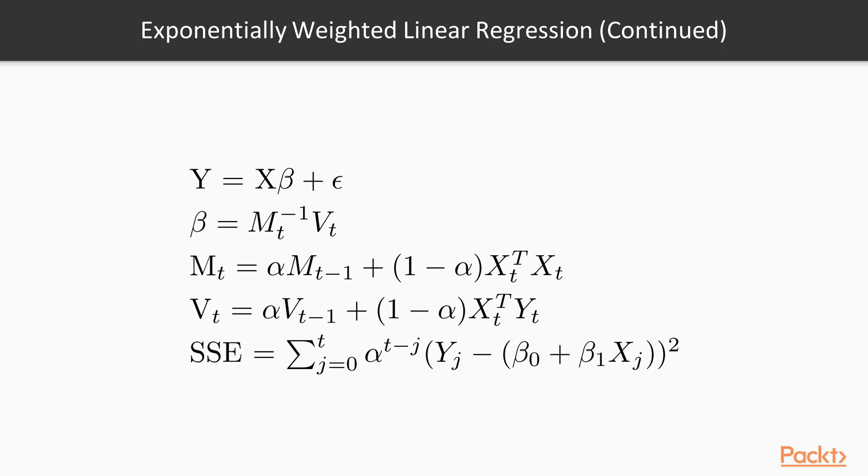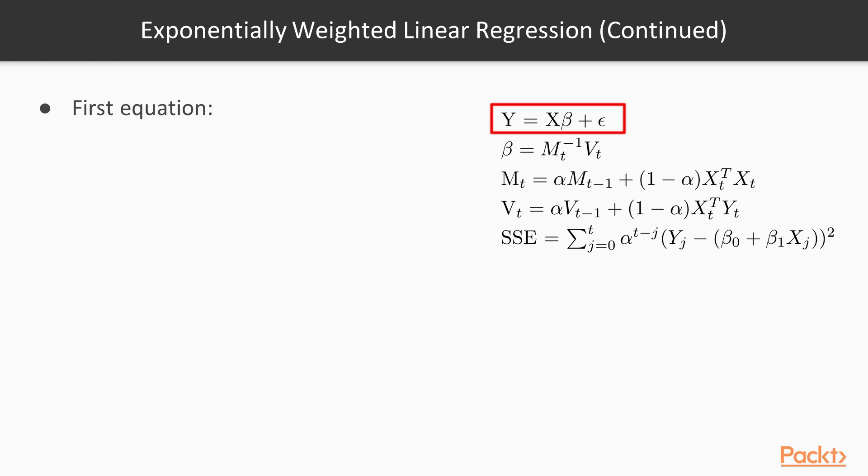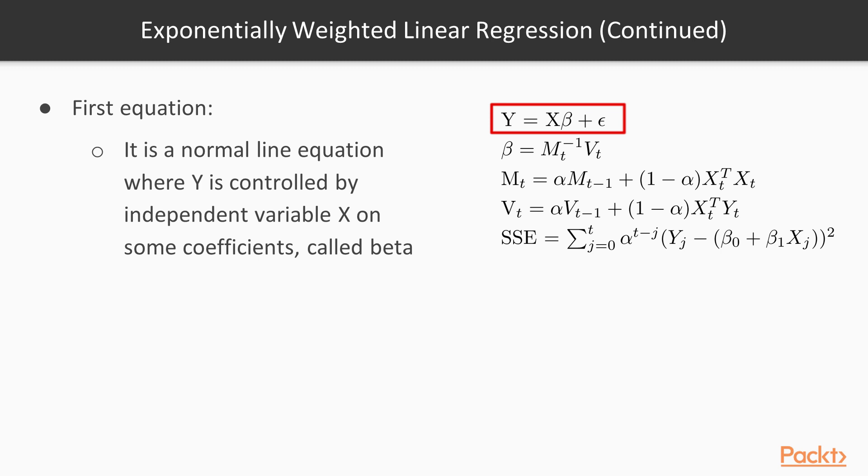So let's have a deeper look at the equations and find out that they are simpler than they seem to be. The first equation, Y = Xβ + ε, is the normal line equation where the response Y is controlled by the independent variable X and some coefficients called beta. In this example, the epsilon parameter is quite a new thing in this lecture, which is a noise parameter assumed to follow a normal Gaussian distribution. Remember from section two that we always had this idea of noise, variance, and bias. This idea is quite inherent in almost every statistical model we are going to use, so get custom to it.